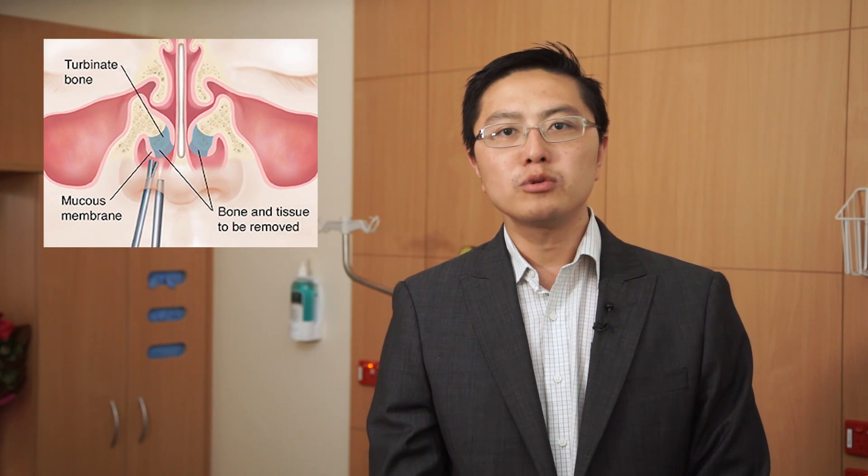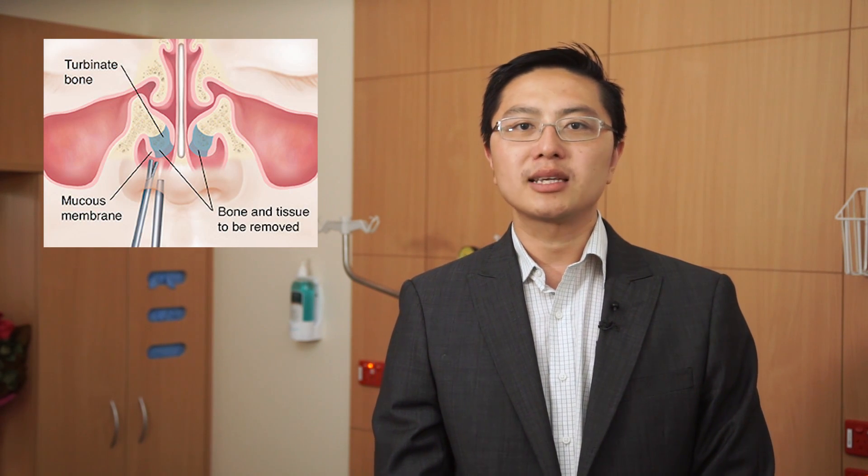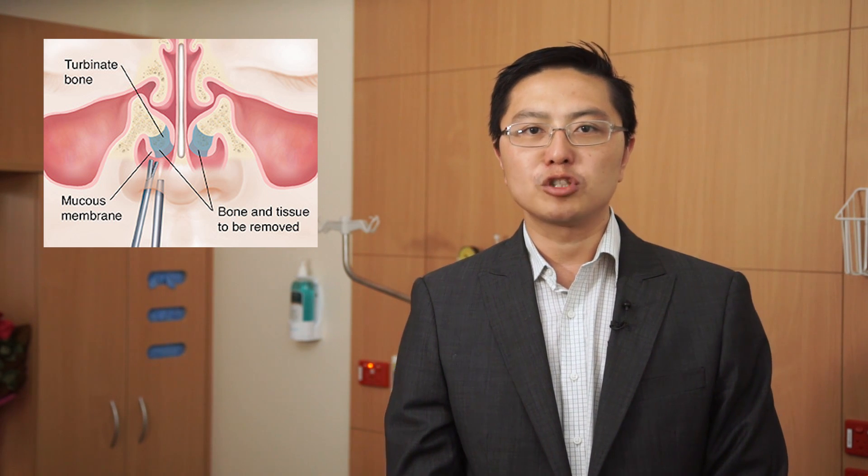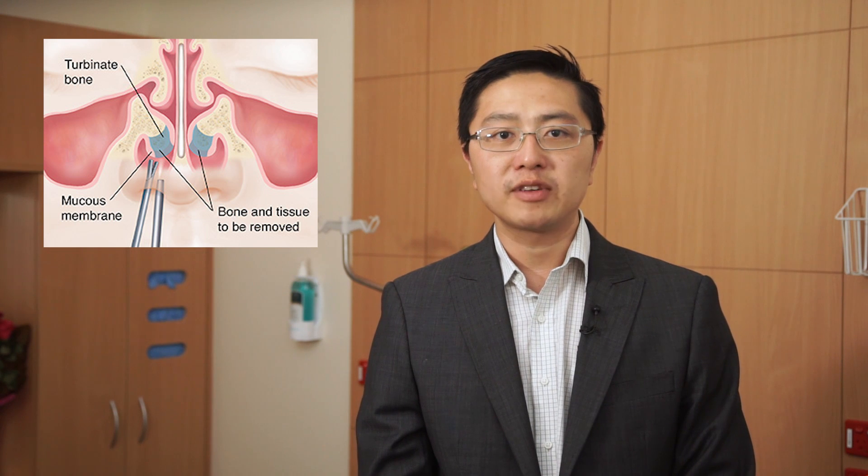Turbinates consist of bone as well as the lining of the bone called the mucus membrane. The mucus membrane can become congested in response to gravity such as lying down, allergies, infections, hormonal changes, and certain foods or medications. When the turbinates become enlarged, they block the nasal passages and make you feel congested.